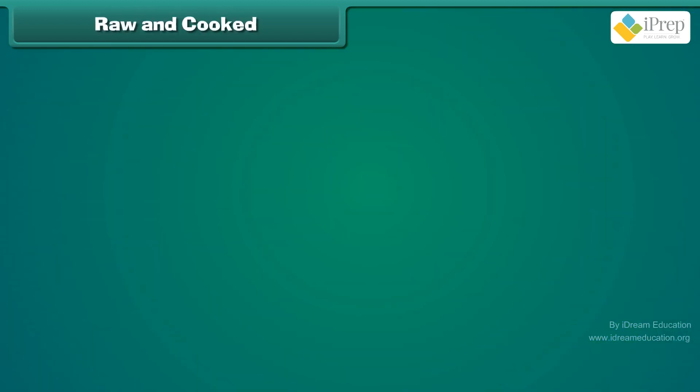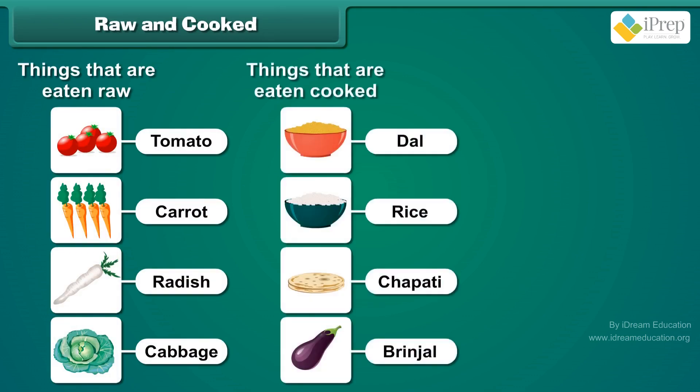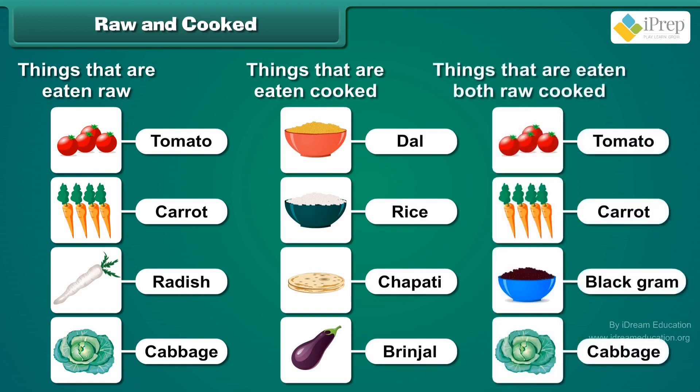Here you see a table with common items listed that can be eaten raw, items that need to be cooked before eating, and items that can be eaten both raw and cooked.